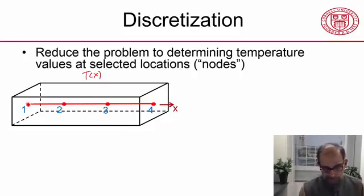Instead of determining temperature everywhere along that line, I'm going to determine only at selected locations. In particular, I'll determine it at four locations: one, two, three, four. And everywhere else, I will just use an interpolation. So if I want to know the temperature here, I'll use an interpolation between that value and that value. It's a linear interpolation.